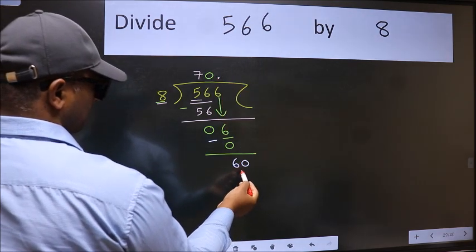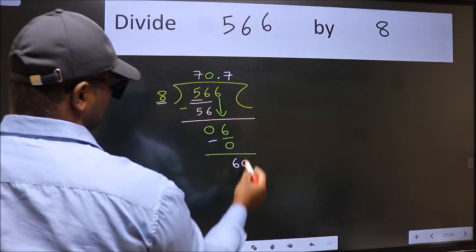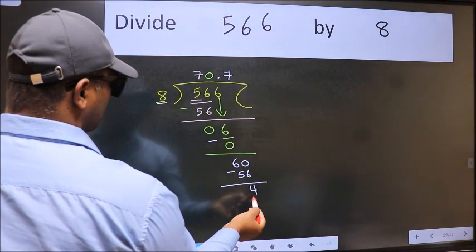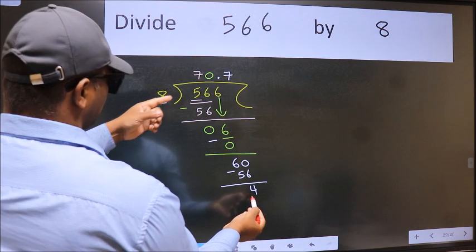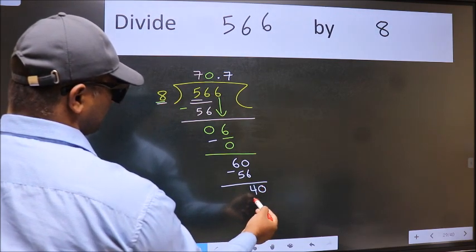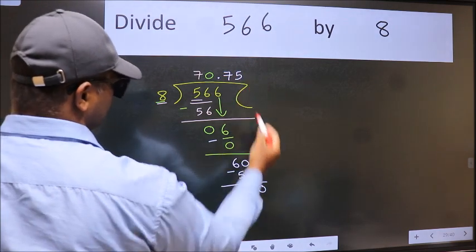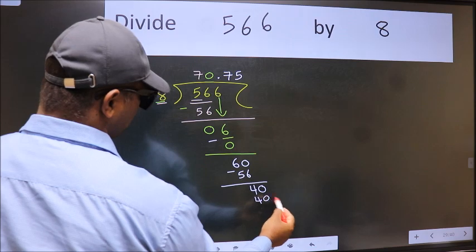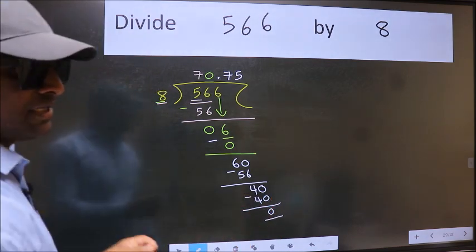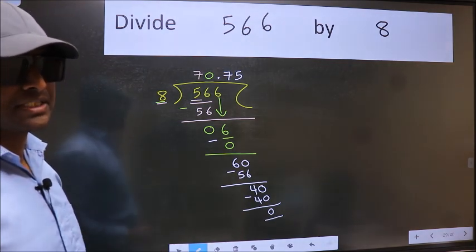A number close to 60 in the 8 table is 8 sevens are 56. Now we subtract — we get 4. 4 is smaller than 8. We already have the decimal, so directly take 0: 40. When do we get 40 in the 8 table? 8 fives are 40. Now we subtract — we get 0. Did you understand where the mistake happens? You should not do that mistake.